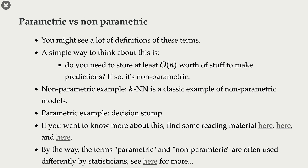Based on what we just said, there is this notion of parametric models and non-parametric models, and KNN is a classic example of non-parametric models. You will find many definitions of these terms, but a simple way to think about this is to ask: do you need to store at least order of n worth of stuff to make predictions? If yes, your model is non-parametric.